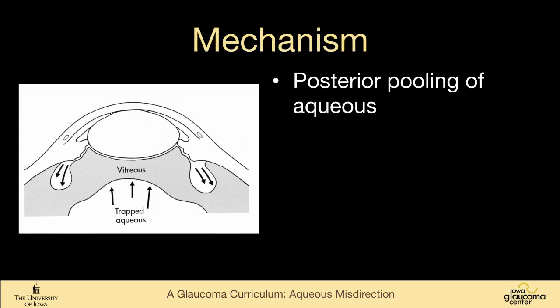The mechanism is really pretty unclear. We know that there is aqueous behind or within the vitreous. It drives the vitreous forward and compresses the anterior vitreous, and it seems as though this anterior vitreous has become relatively impermeable to aqueous. There are lots of theories about why that occurs — including aqueous being shunted posteriorly, though we're not 100% sure that happens. There are also theories about aqueous transudating from behind and theories about choroidal expansion.